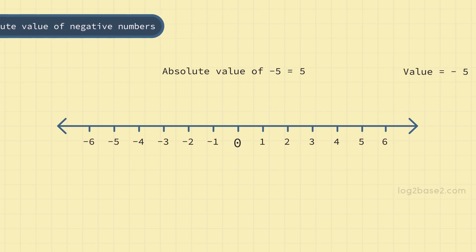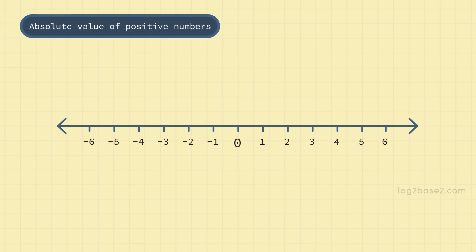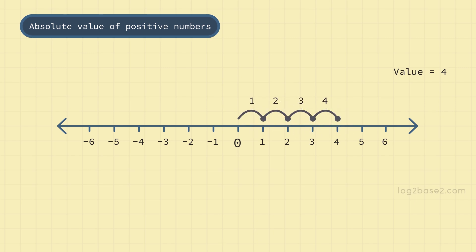Now take another example — take a positive number 4. The absolute value of 4 is the distance between 0 and 4. So that is 1, 2, 3, 4 — so 4 units. The absolute value of 4 is 4.